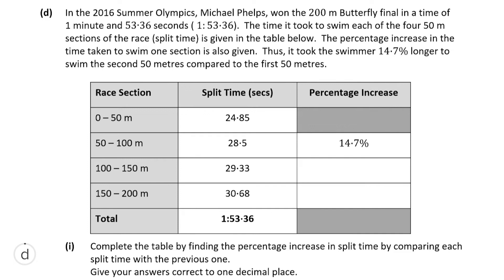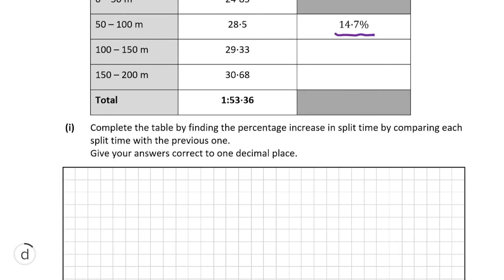Moving on to part D: in the 2016 Summer Olympics, Michael Phelps won the 200 meter butterfly in a time of 1 minute and 53.36 seconds. The time it took to swim each of the four 50 meter sections of the race is given in the table below, along with the percentage increase in time taken from one section to the next. We can see in the table that the percentage increase from the first split to the second split is 14.7%.